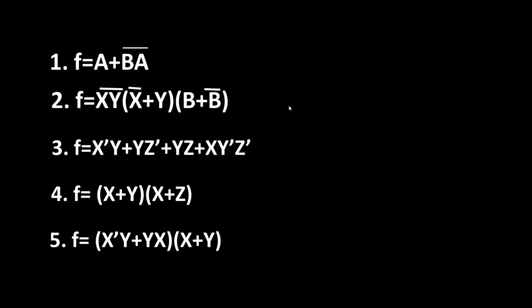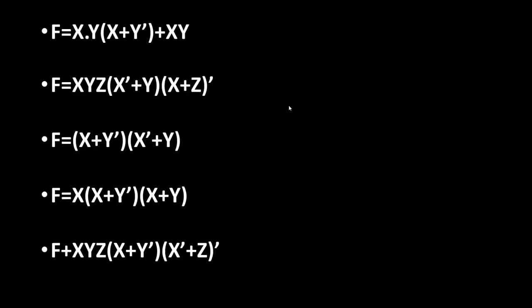Now let's do the exercises. You have ten questions in total — five in one group and another five. What you have to do is first simplify using simplification theorems, and then create the final circuit using basic logic gates for each simplified formula.